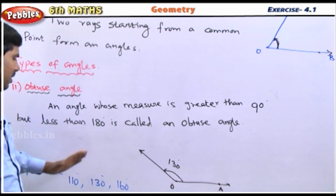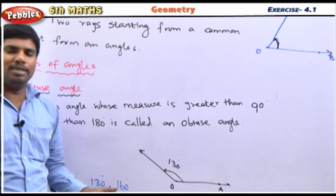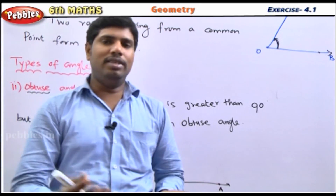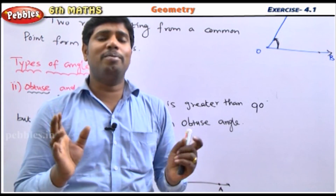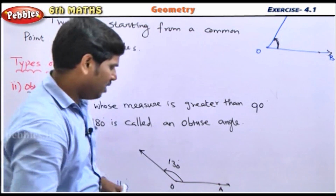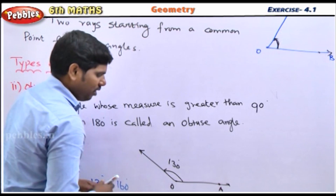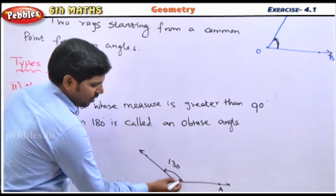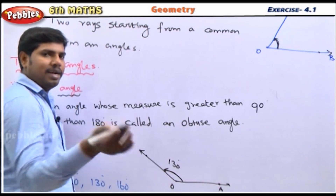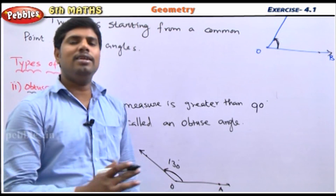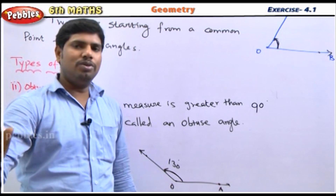For example, 110 degrees, 130 degrees, 160 degrees, 150 degrees, 170 degrees. The two rays OA and OB form an angle more than 90 degrees and less than 180 degrees. For example, 130 degrees is an obtuse angle.